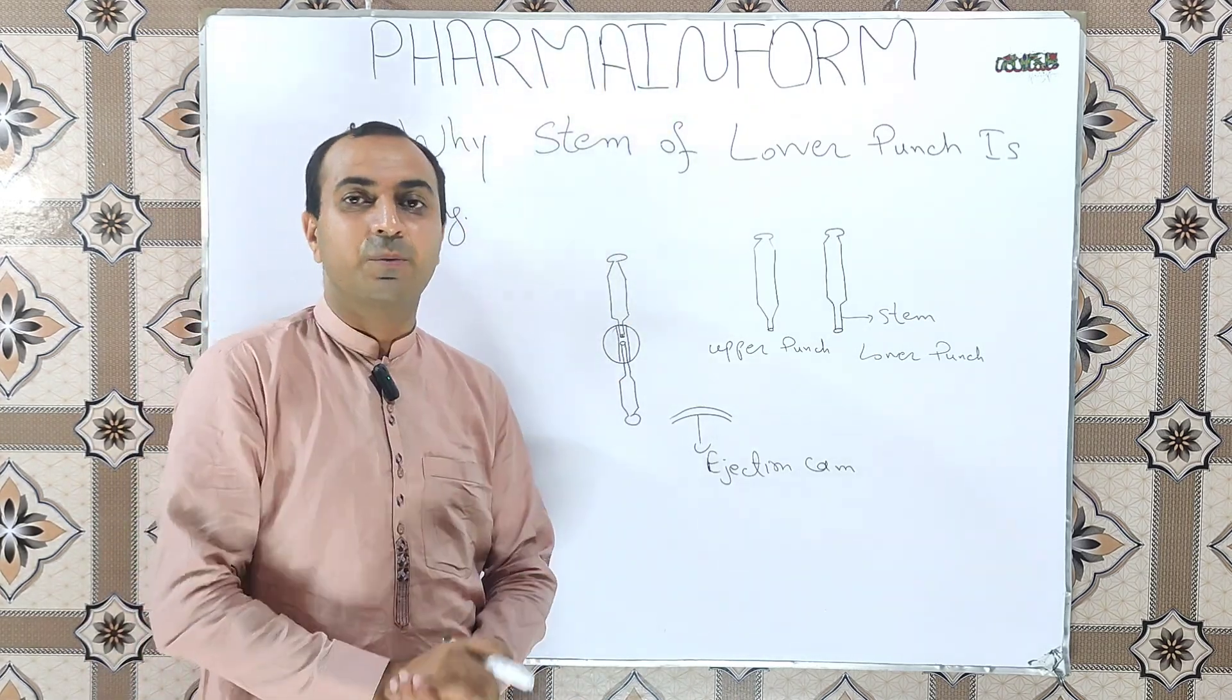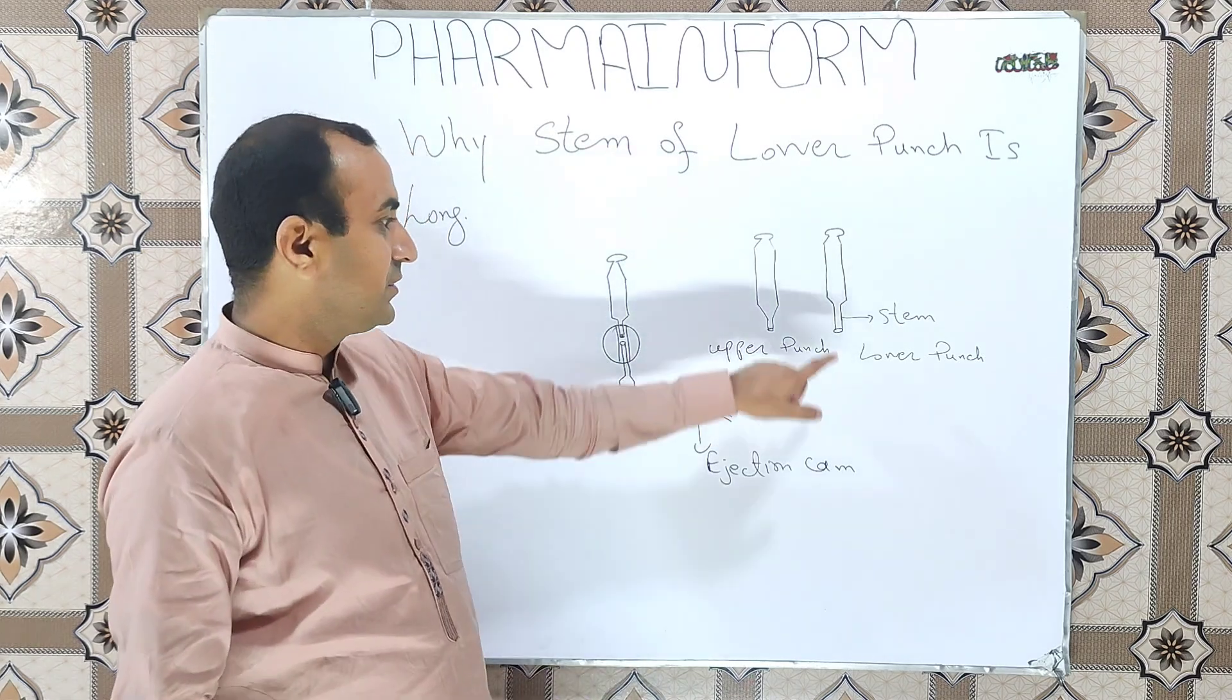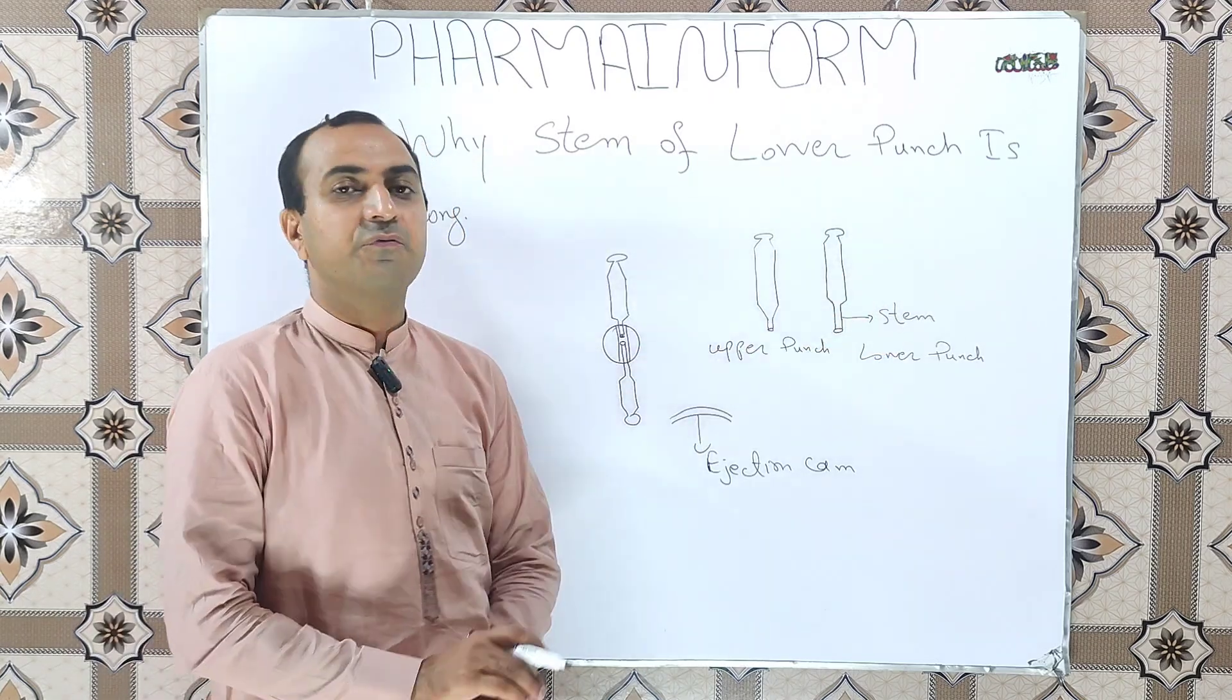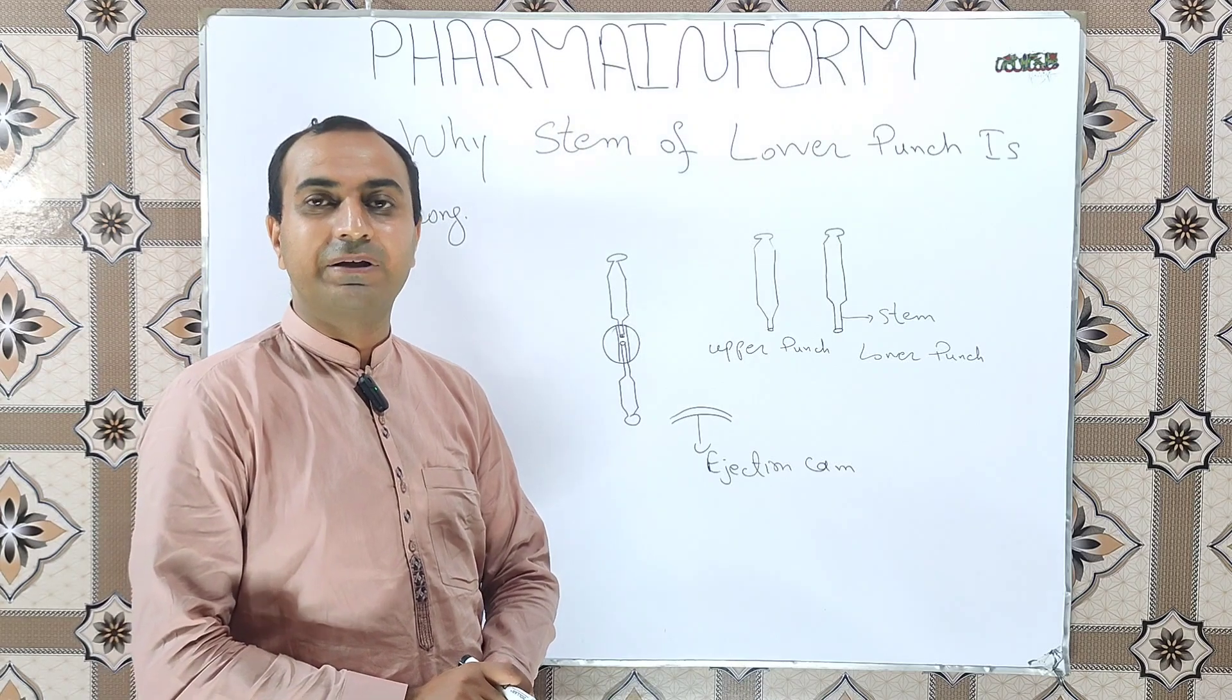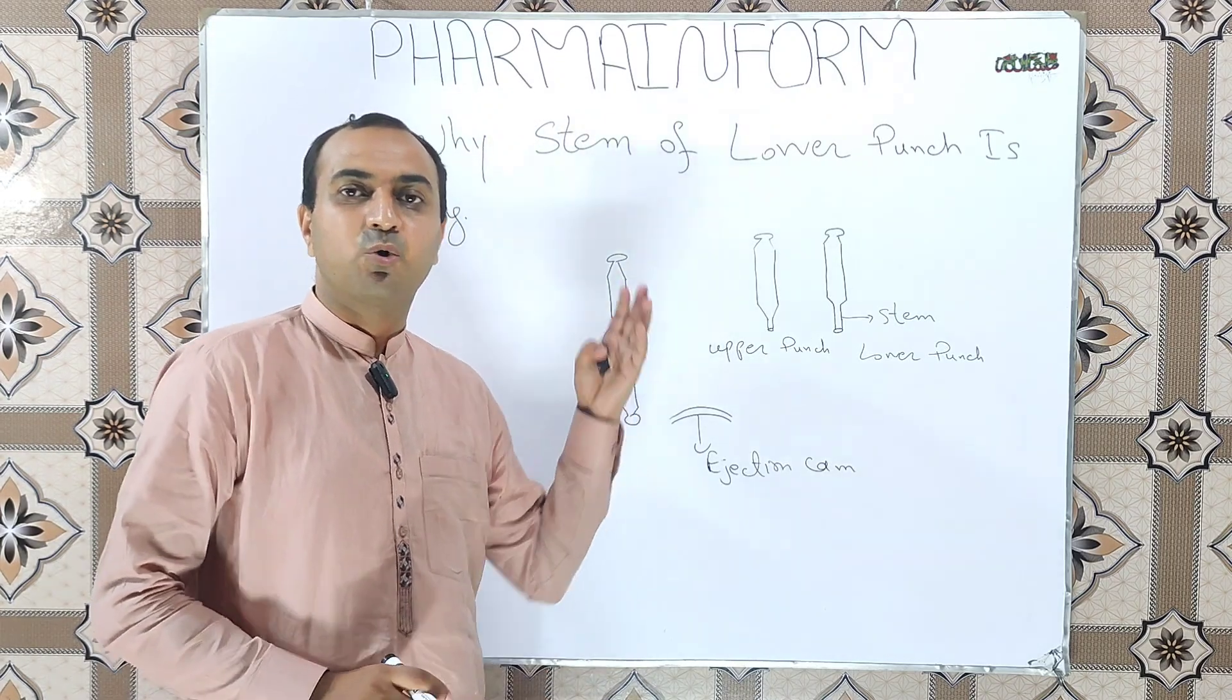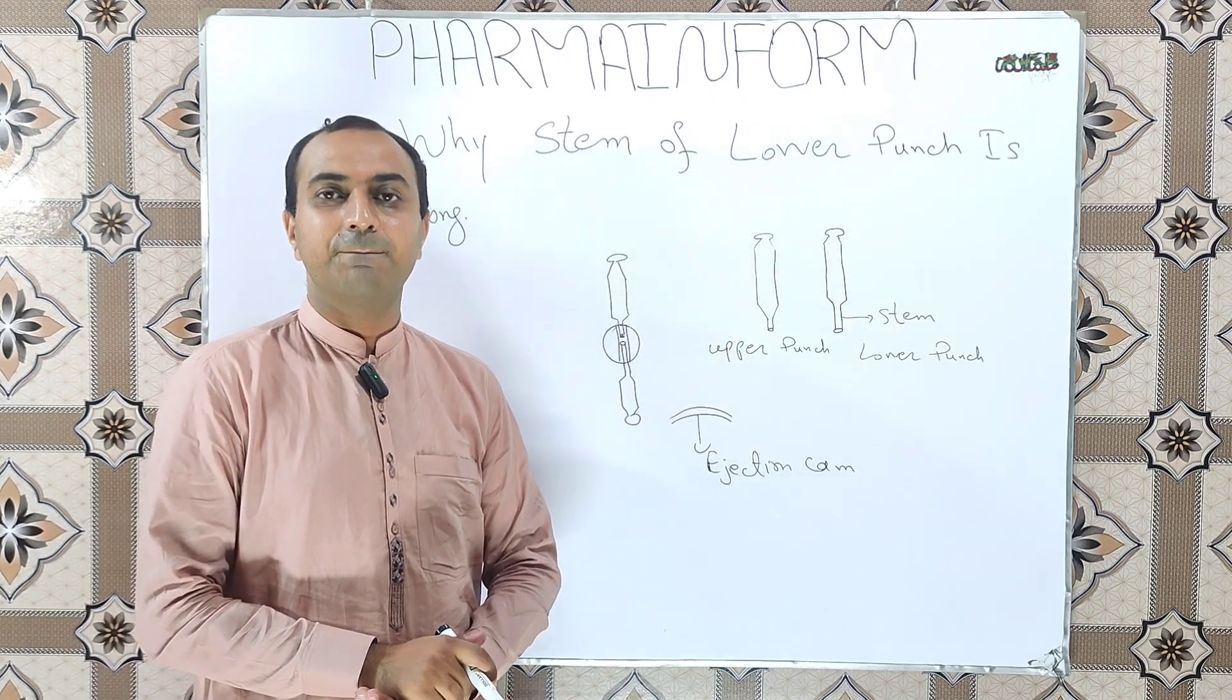All of you are familiar that this part of the punch is known as stem of the punch or in simple terminologies we call it punch tip or sometimes neck of the punch, but basically the correct term used for this is the stem of the punch.